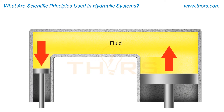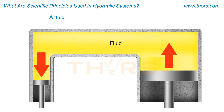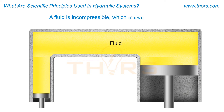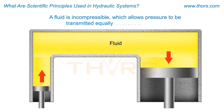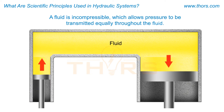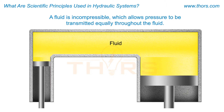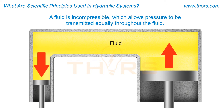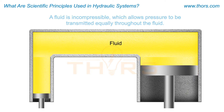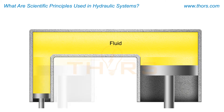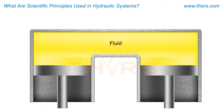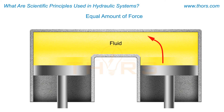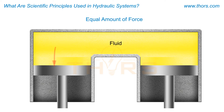Pascal's law states that a fluid is incompressible, which allows pressure to be transmitted equally throughout the fluid. It is best to visualize Pascal's law by using two cylinders connected by a tube. If both cylinders are the same size, the pressure exerted on the piston will transmit an equal amount of force to the second cylinder.